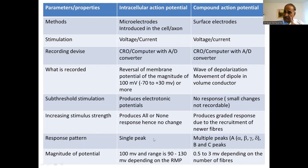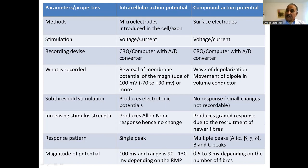The response pattern intracellularly is a single peak. For compound action potential, there are multiple peaks depending on the type of fibers involved — fast fibers, slow fibers, slowest fibers — giving A, B, C peaks. Within A: alpha, beta, gamma, delta; then B and C fibers. A-delta equals B. The magnitude of the intracellular action potential is on average 100 millivolts, ranging from minus 90 to 130 millivolts depending on resting membrane potential and peak potential. For compound action potential, it is between 0.5 to 3 millivolts.